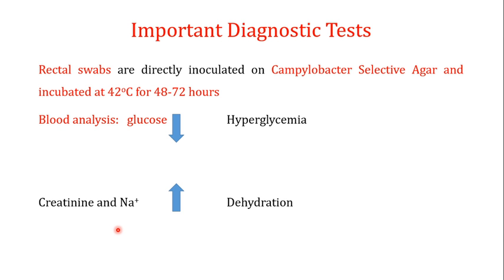For diagnosis, rectal swabs are directly inoculated on Campylobacter selective agar and incubated at 42 degrees Celsius for 48 to 72 hours. If there is growth, that indicates infection; if there is no growth, there is no Campylobacter jejuni infection. You can also perform blood analysis — there may be a low level of glucose, which can cause hypoglycemia, attributed to food not being properly absorbed by the damaged intestinal epithelial cells. There can also be high concentrations of creatinine and sodium in the blood due to dehydration.